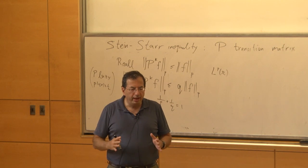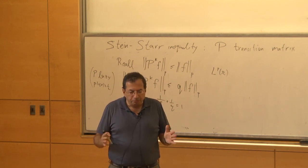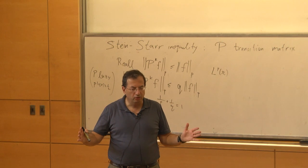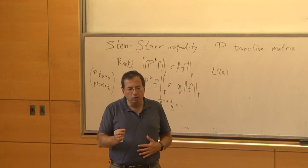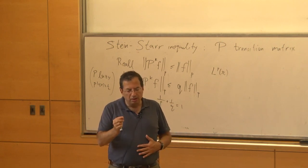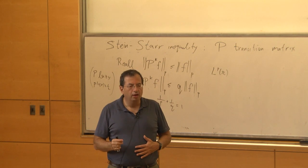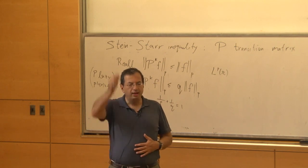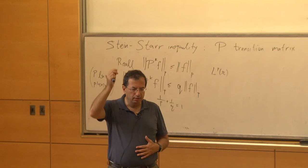P to the K F is, for every K, a vector. You can look at the specific entry — like the seventh entry — and for every K take a maximum or supremum over all K's. You have a sequence of vectors or functions, and you just take the pointwise supremum of these functions.